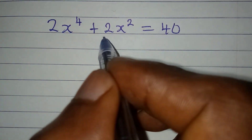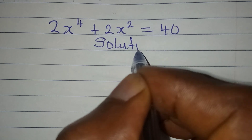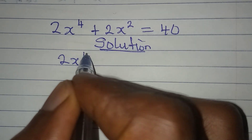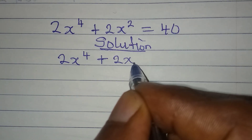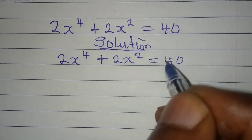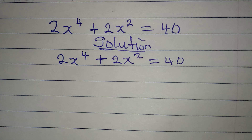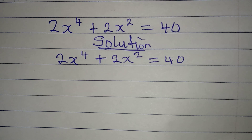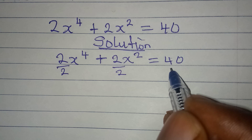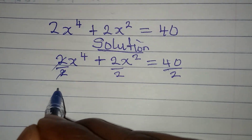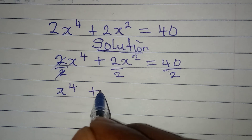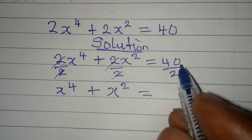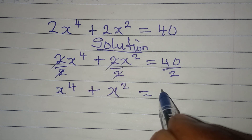Let us provide the solution to this problem very quickly. We have 2x to the power of 4 plus 2x squared equals 40. Remember that 2 is common to all of them, so we can reduce this equation by dividing by 2. This gives us x to the power of 4 plus x squared equals 20.